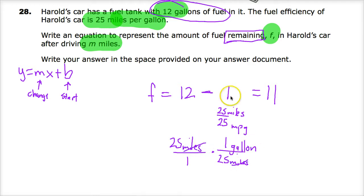What if I wanted to get it down to 10 gallons? Then I would have to go 50 miles. 50 miles would cancel, giving me 2, and 12 minus 2 gives me 10. So something here matters - this right here.